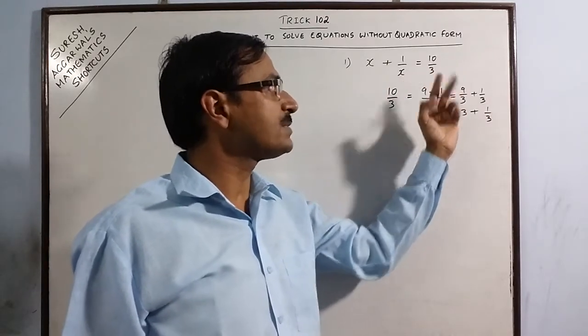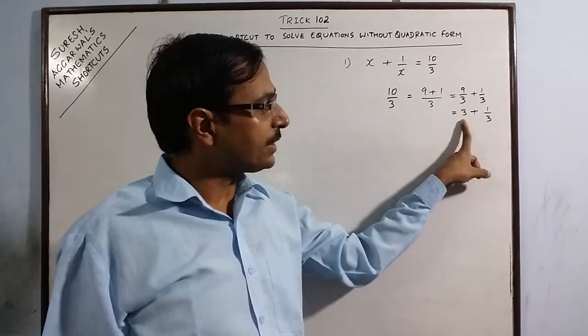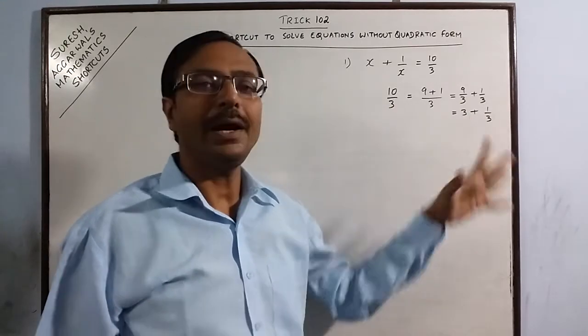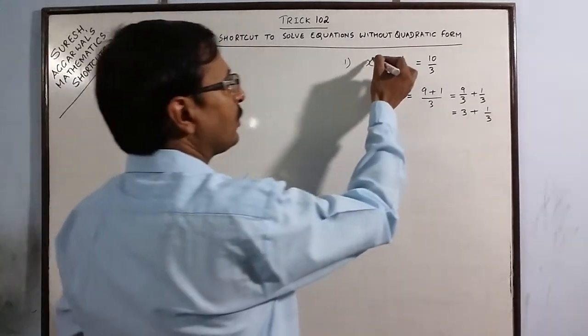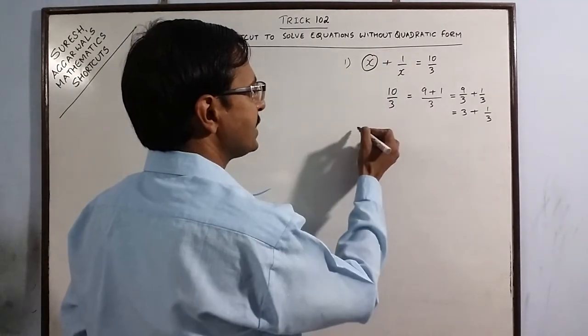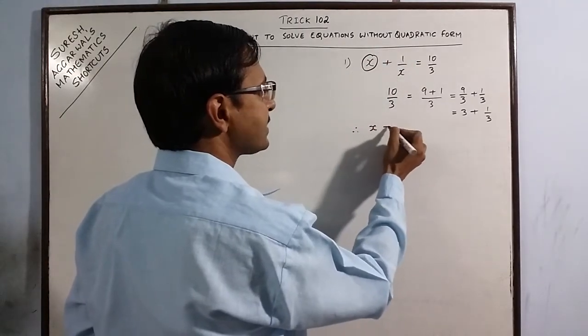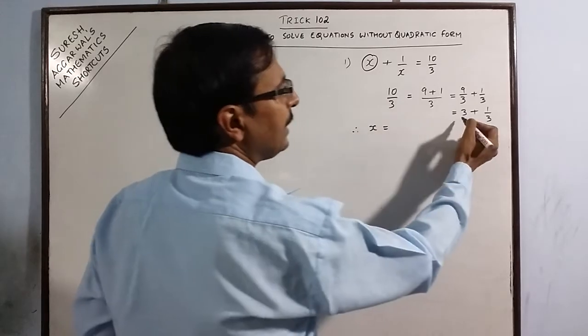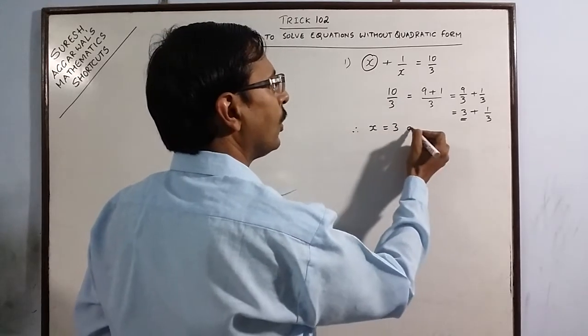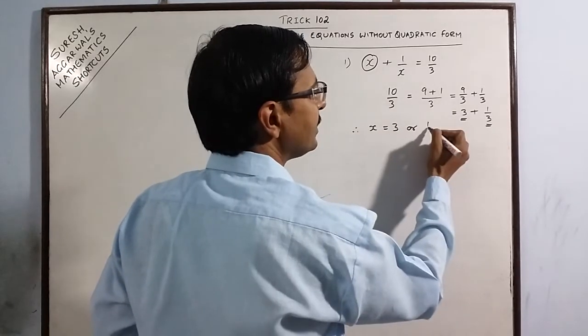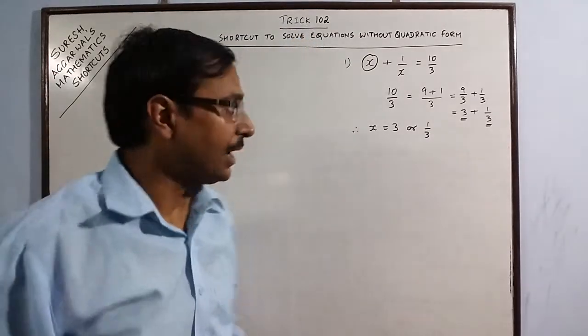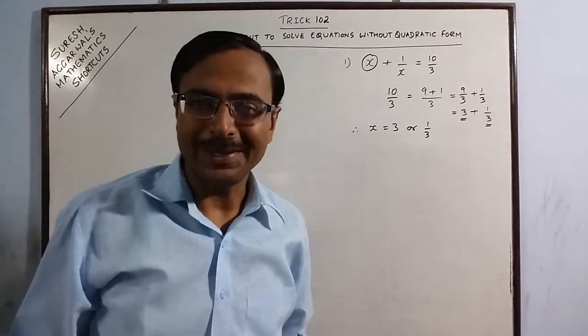Now 10 by 3 is broken into two parts, one term and its reciprocal added together. So, if you have only x here, just take x, the first term here will be equal to either 3 or the second term 1 by 3. So this is your answer, x is either 3 or 1 by 3.